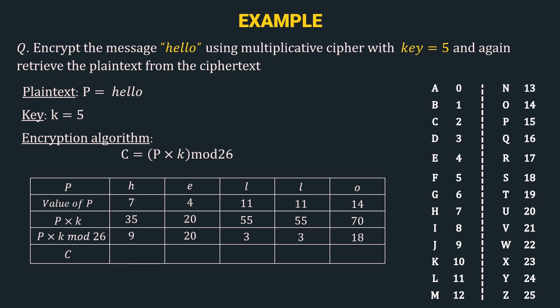Moving forward, the next row is c, our ciphertext. Referring to the mapping table: 9 represents J, 20 represents U, 3 represents D, again 3 is D, and 18 represents S. So the ciphertext is J, U, D, D, S. We have successfully encrypted the plaintext 'hello' using the multiplicative cipher.